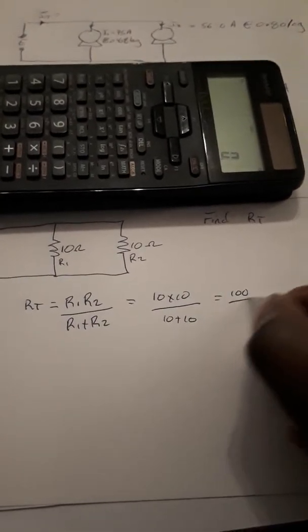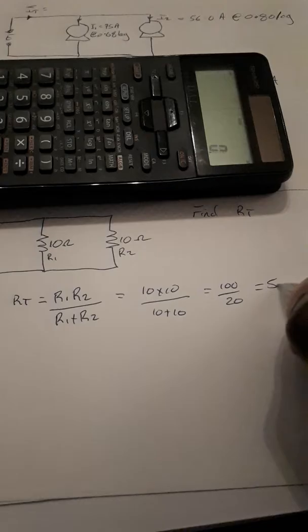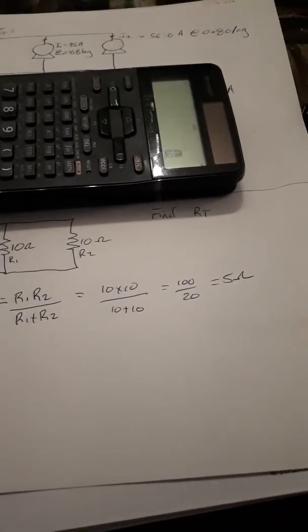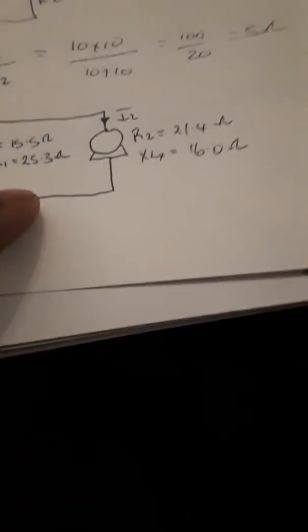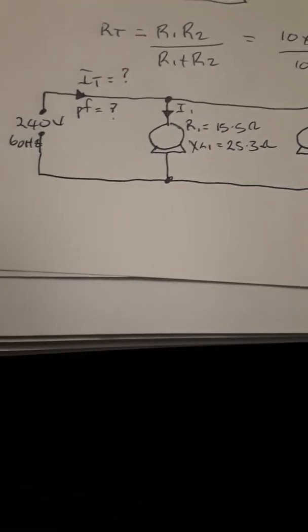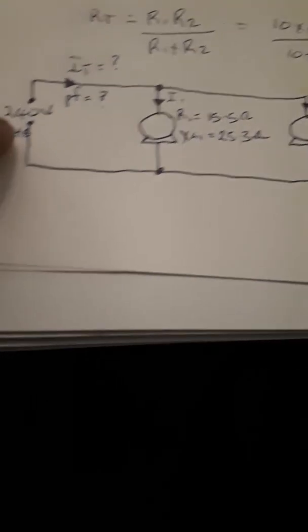Let's say you're given this circuit in an exam. They say you have a 240 volt source, 60 Hertz. Motor one has a resistance of 15.5 ohms and inductive reactance of 25.3 ohms.